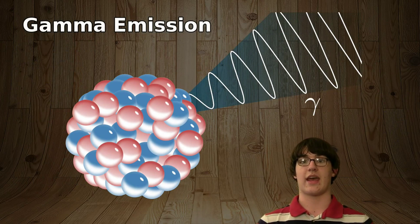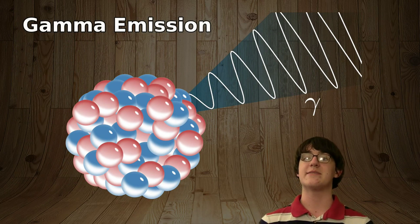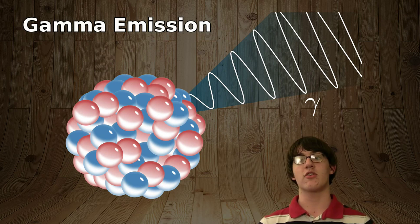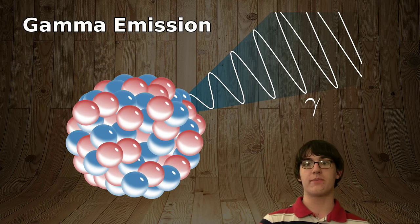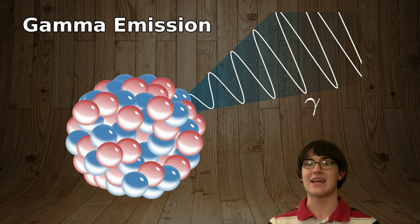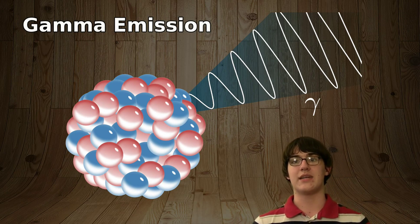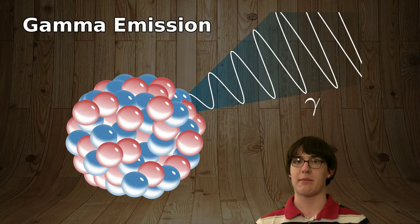The last form of decay, gamma emission, is special. It can only occur after alpha or beta decays have happened. This is due to alpha or beta decay getting a nucleus excited, and the only way it can calm down is by putting out a gamma photon.